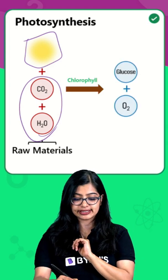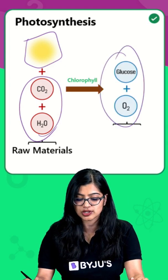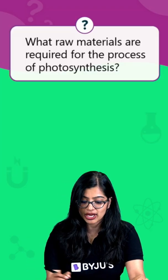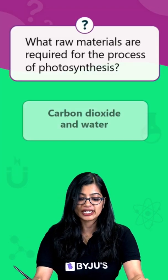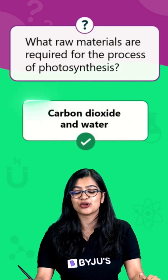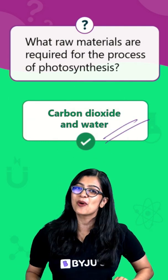The end products are glucose and oxygen. So, the answer is: the raw materials required for the process of photosynthesis are carbon dioxide and water.